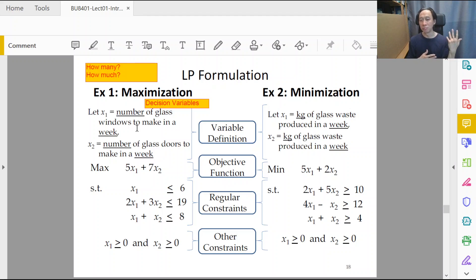Or it can be x1 is the number of glass windows to make in a week in January, because there are seasonal fluctuations. So the number of glass windows to make in January is different from those in December or in June. It depends on the scope and the context, but minimally I will stress that you must put in unit and the time duration.